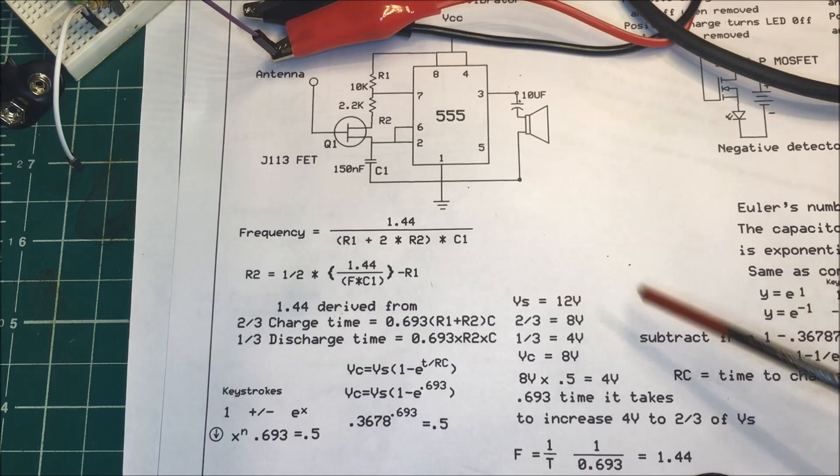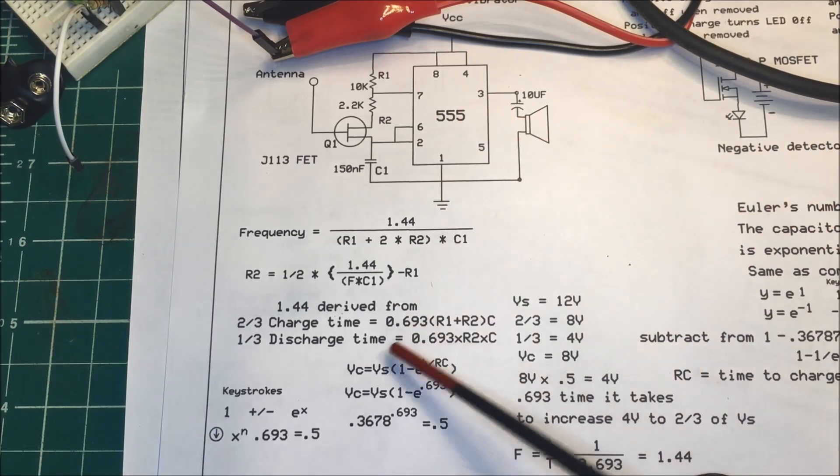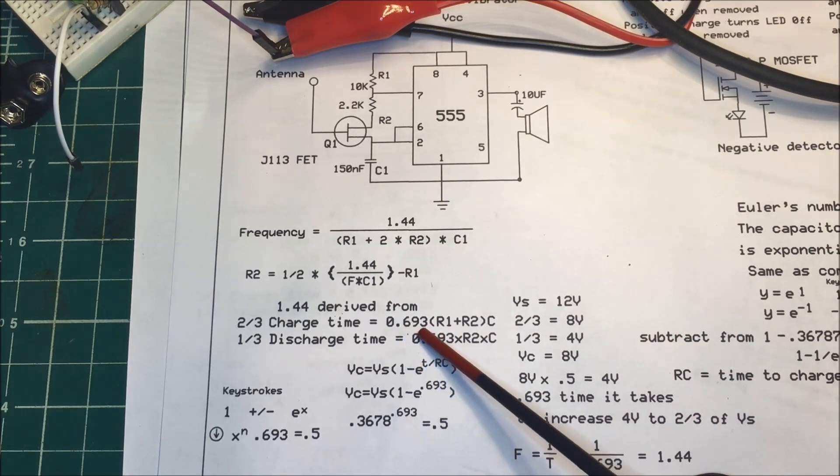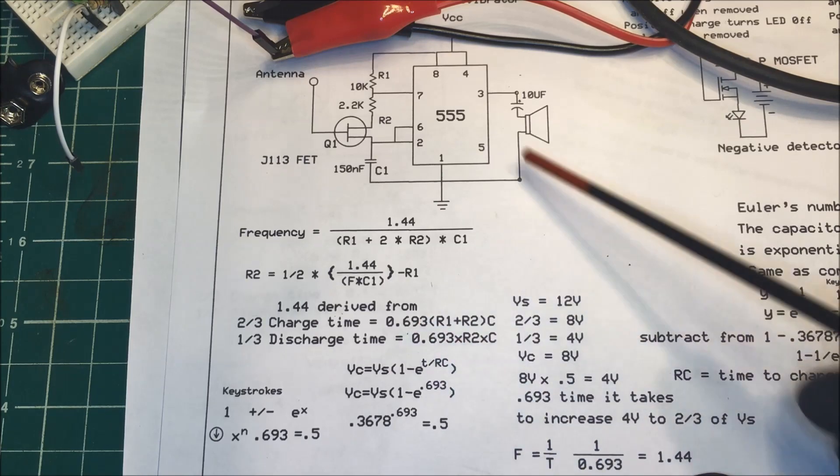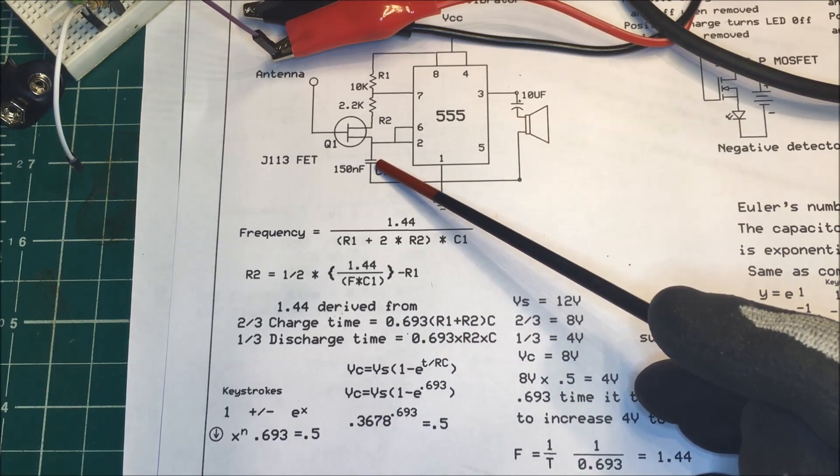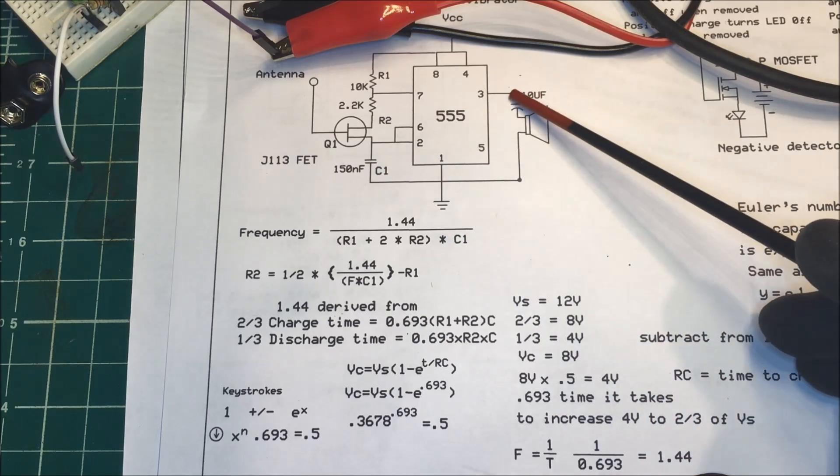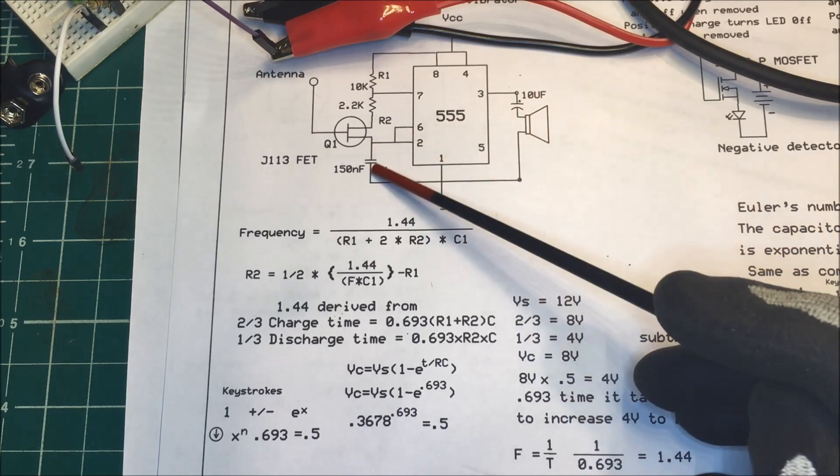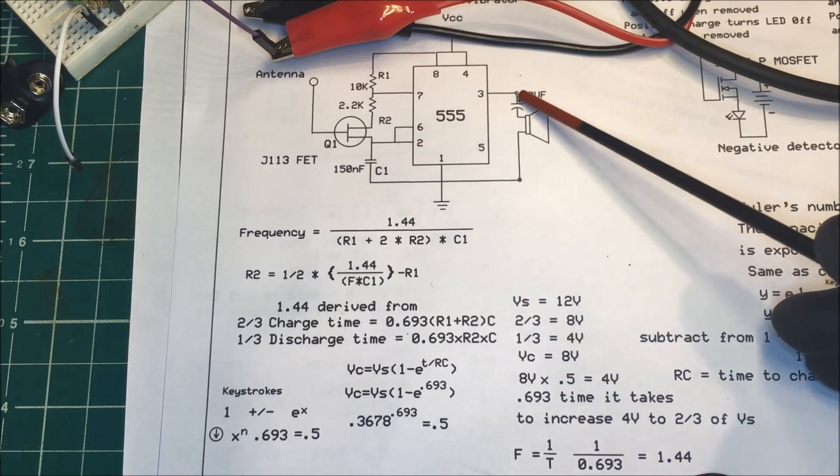Now on the 555 timer here they give us this number here, this 0.693 number, and the reason for that is that when this capacitor charges to two-thirds of the voltage source, this terminal 3 here will turn on, and when it discharges down to one-third this turns off.